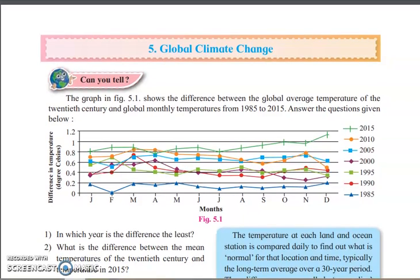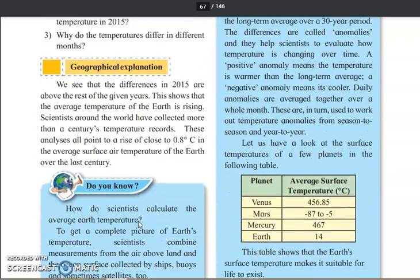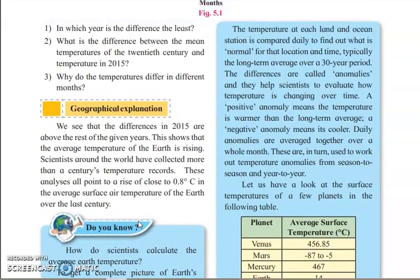To understand that, first we need to understand the exact difference between climate and weather. Many times we usually say 'today's weather is...' but there is a difference between climate and weather. Weather is nothing but a short-term condition of the atmosphere — what is the weather now, after one hour, after two hours. It is a continuous, short-term process. Climate, on the other hand, is always the average of weather — when many weather predictions come together, the average of all those weather predictions is considered as climate.